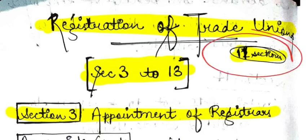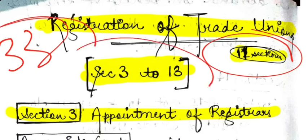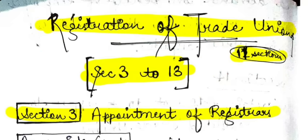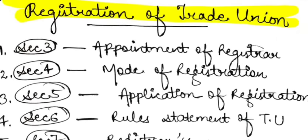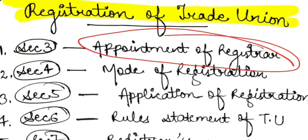Here is a synopsis of the registration sections (Sections 3–13), which total 11 sections out of 33. Section 3 covers appointment of registrar; Section 4 the mode of registration; Section 5 the application for registration; Section 6 the rules statement; Section 7 registrar's powers; Section 8 the registration itself; Section 9 the certificate of registration; Section 10 cancellation of registration; Section 11 appeals; Section 12 registered office; and Section 13 the effect of registration.